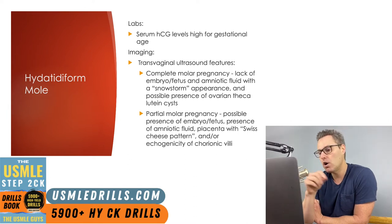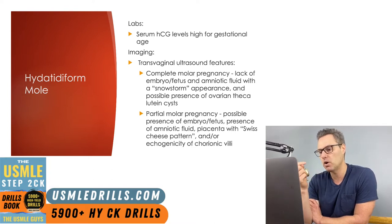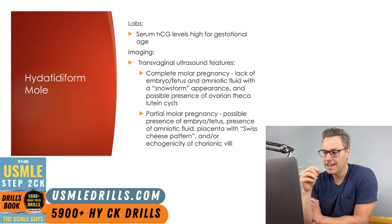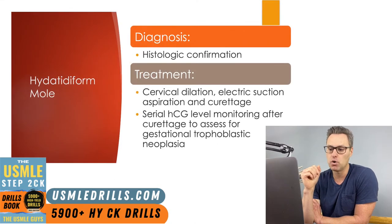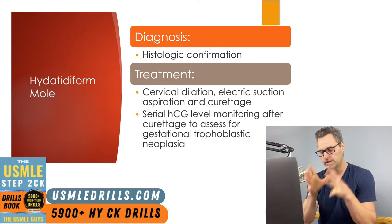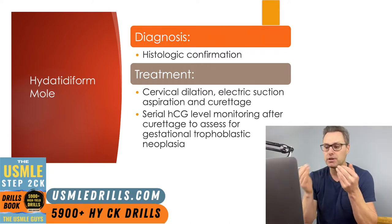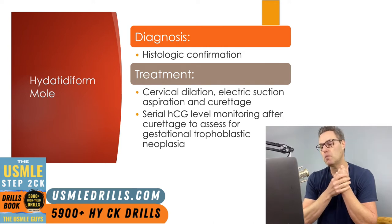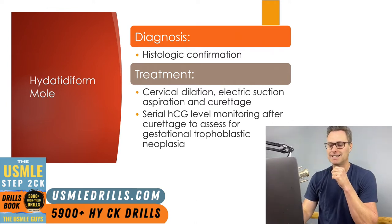The complete molar pregnancy may also present with ovarian thecalutein cysts. In partial molar pregnancy, we can see embryo or fetal components, the presence of a small amount of amniotic fluid, a placenta with a Swiss cheese pattern, and increased echogenicity of chorionic villi. To make a diagnosis of hydatidiform mole, a tissue sample will be obtained and histology examined. Treatment includes dilation and suction aspiration and curettage. With the tissue sample, a distinction of partial versus complete mole can definitively be made using karyotyping. Serial HCG level monitoring after curettage will also be performed to assess for gestational trophoblastic neoplasia.